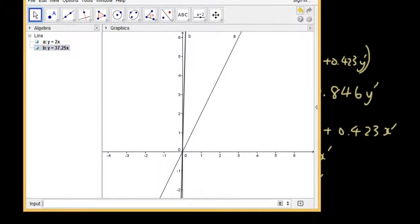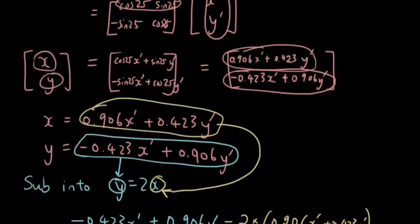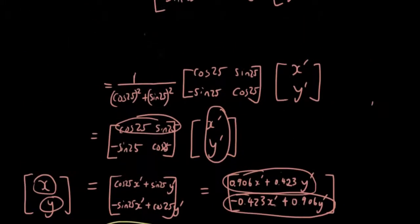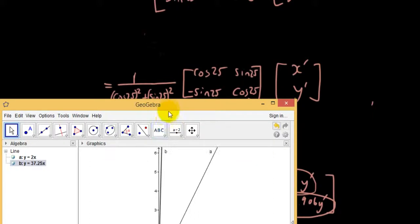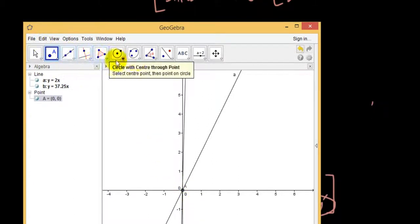Now I'm going to try and get the angle in between them, and if it's somewhere around 25 degrees, then I have got it correctly, I have done it correctly. So let's draw a point at the origin. Let's get the angle.